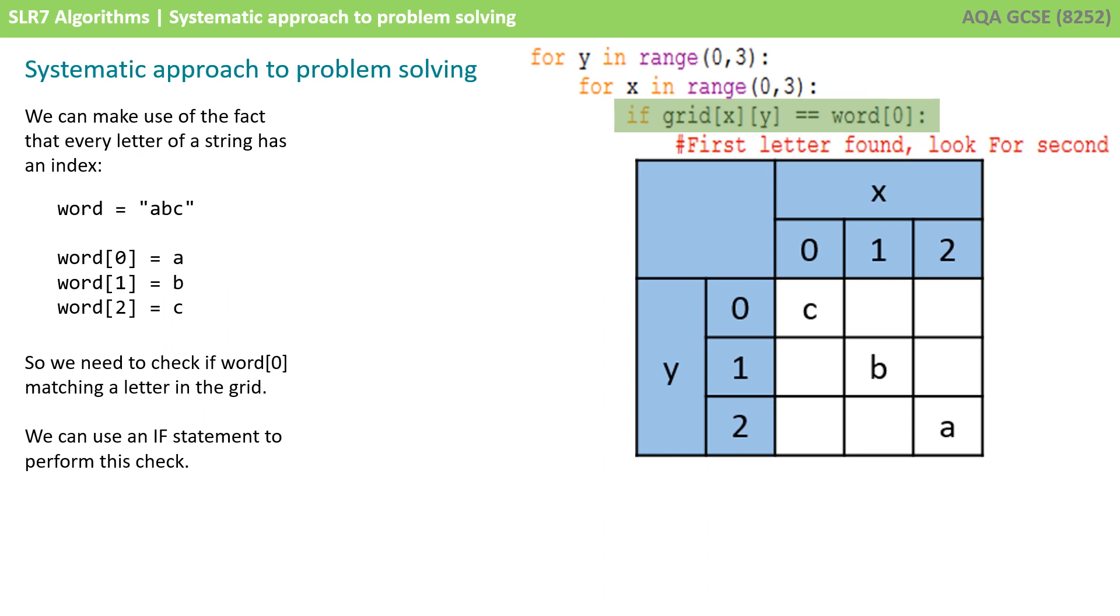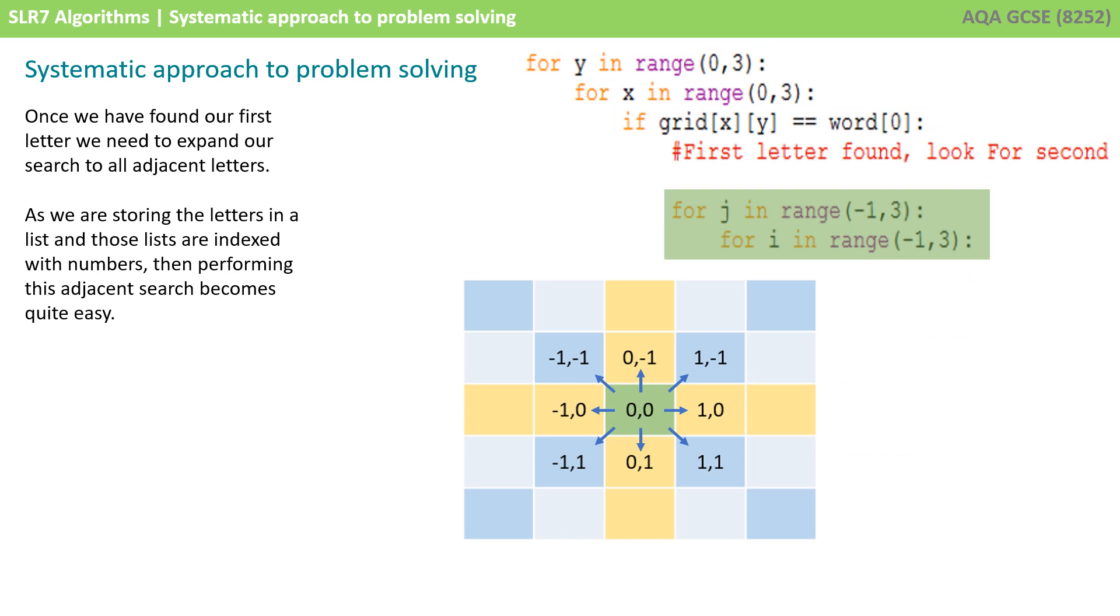So, now that we can visit every letter in the grid, we need to think about whether that letter is going to match the first letter of our word. Now, here we can make use of the fact that a string has an index for every letter. So, word 0 in our example would be a, word 1 would be b, word 2 would be c. So, we're looking for word 0 matching the letter in the grid, and we can achieve this with a simple if statement. If grid xy equals word 0, then we find a letter in the grid that matches the first letter of the word that we're looking for.